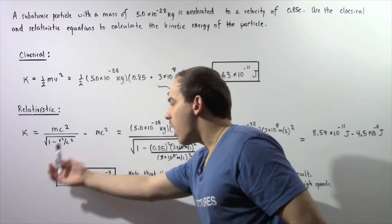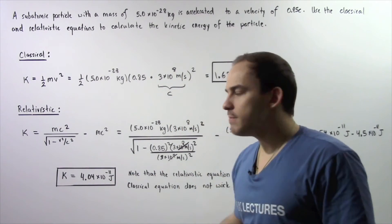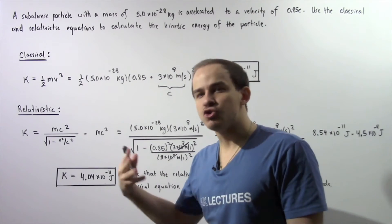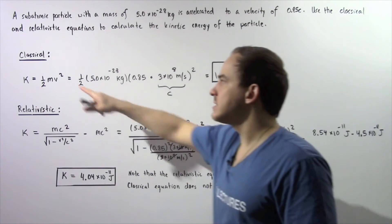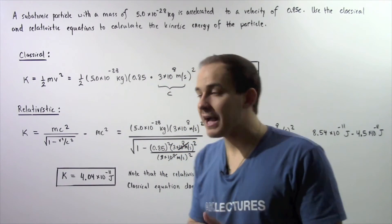Notice that this quantity that is given by the relativistic equation is about twice as large as the quantity that is suggested by the classical equation.